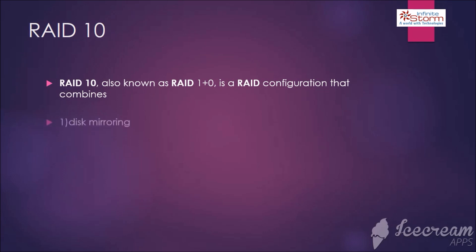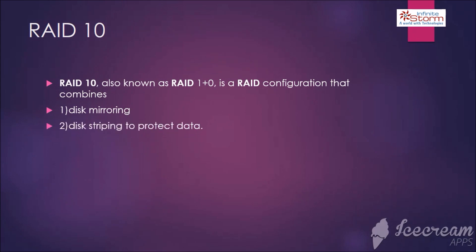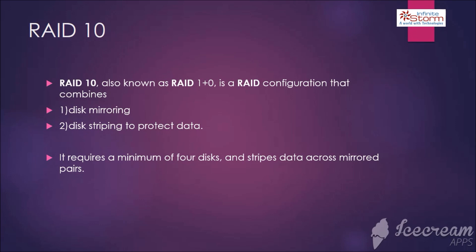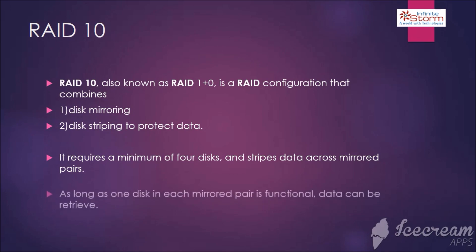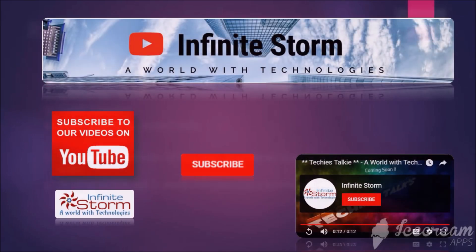RAID 1+0 is a RAID configuration that combines disk mirroring and disk striping. It requires a minimum of 4 disks and stripes data across mirrored pairs. As long as one disk in each mirrored pair is functional, data can be retrieved.